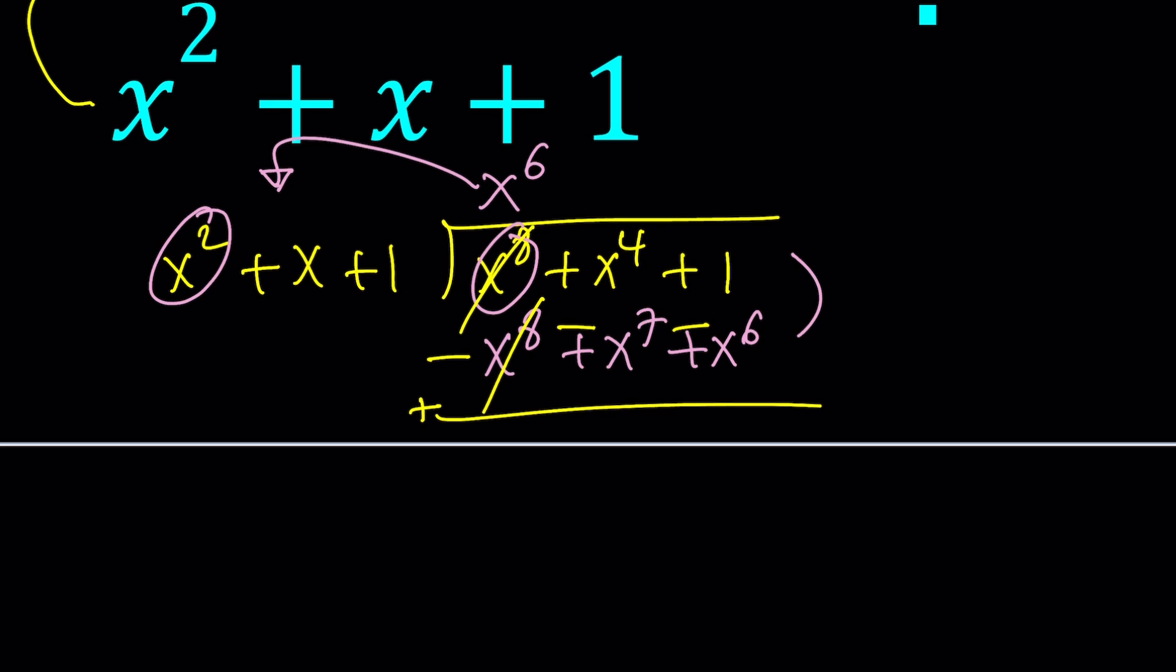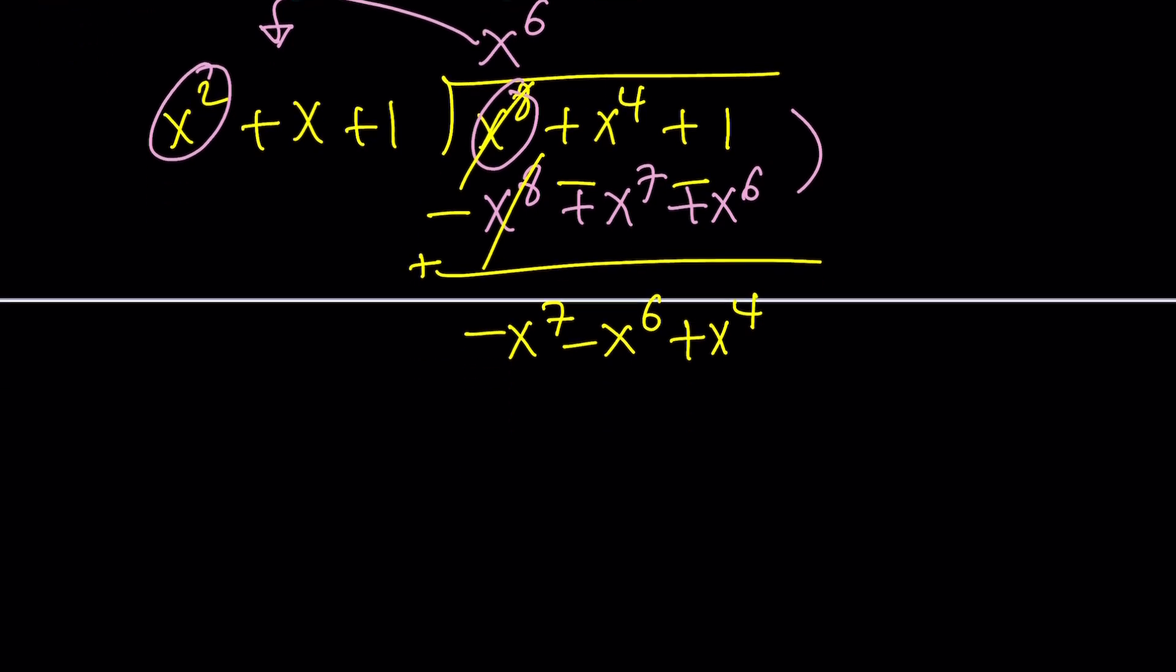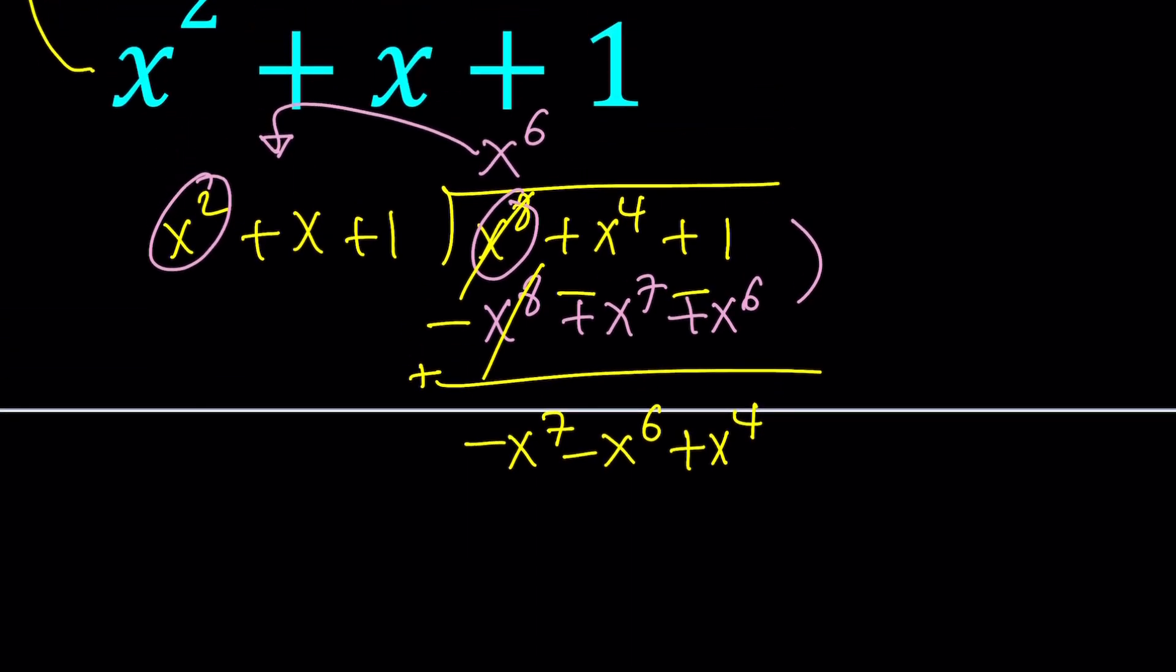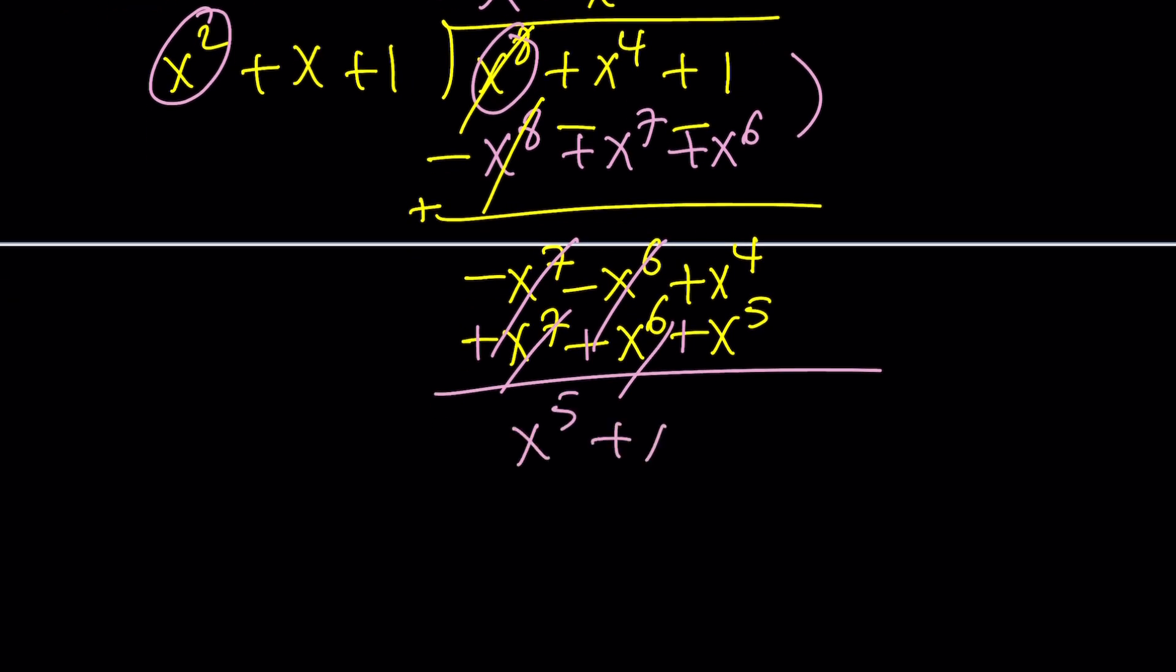And now when you distribute the whole thing, you're going to get x to the 8th plus x to the 7th plus x to the 6th. Now you're going to subtract these two expressions, but to subtract we're going to need to negate the second one, minus minus minus and then add. That's going to be subtraction. So these two are going to cancel out. We're going to end up with negative x to the 7th minus x to the 6th plus x to the 4th.